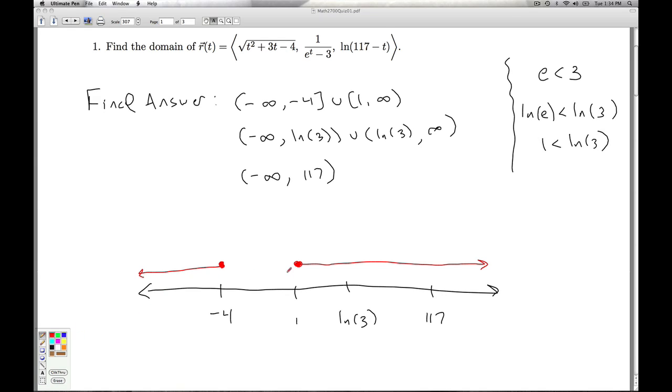Now, for the second part, it's everything up to natural log of 3, but I skip over the natural log of 3 itself, and then everything from that on out. So that's what this looks like. And finally, everything less than 117.